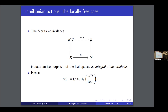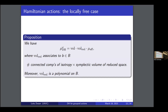In this locally free case, you still have this polynomial nature. The result is: the Duistermaat-Heckman measure is Vol times Vol_red times the affine measure, where Vol is the vol function for the groupoid that is acting, and Vol_red is the symplectic volume of the reduced space — which are again symplectic orbifolds. You still need this normalization factor, and you can prove that this is a polynomial on the leaf space. So, in the locally free case, you also get that the Duistermaat-Heckman measure will be a polynomial.